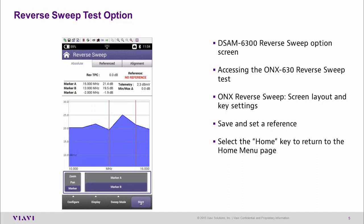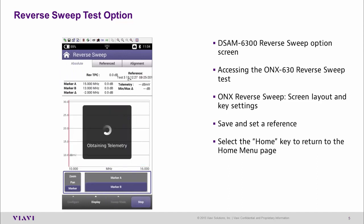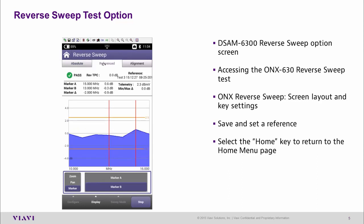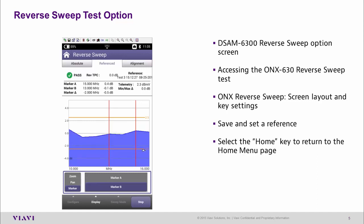Now when I start the test you will see we have the reference — which is our test 3 with a date and time stamp — and we will also see up here a pass, compared to our reference. If we go to the reference tab, we can see our current test results and also the plus 2.5 dB threshold for a failure and the minus 2.5 dB threshold for a failure. This enables us to go to various places within our network to see how those values compare to our reference.